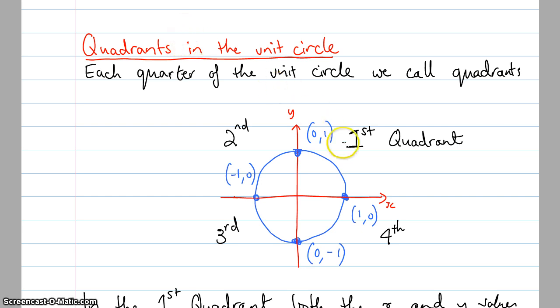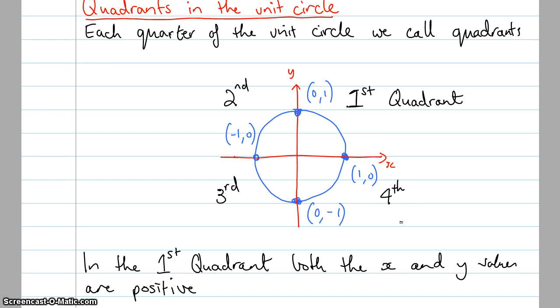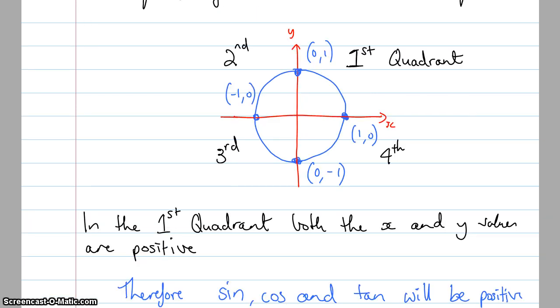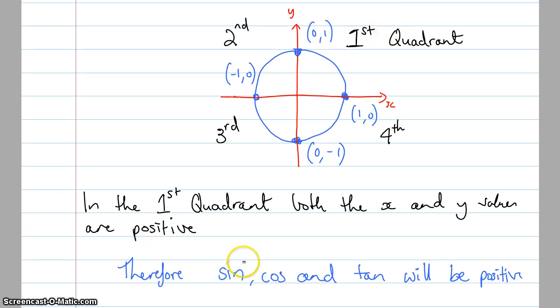So each quarter of the circle we call quadrants. This is the first quadrant, second quadrant, third quadrant and fourth quadrant. In the first quadrant, both x values and y values are positive because this is just a circle plunked on top of a graph. Therefore, sine, cos and tan will all be positive because sine is y, cos is x and then tan will be sine divided by cos. I'm not going into a lot of detail on this. I'm just kind of skimming over the surfaces because I assume that you've already seen this before.